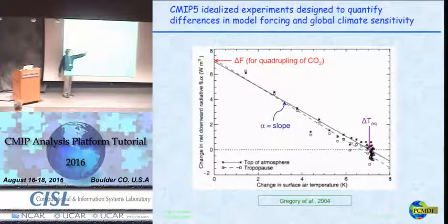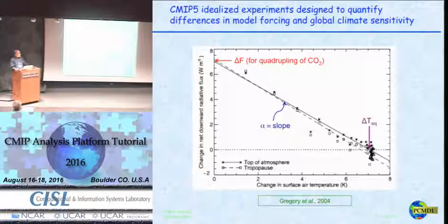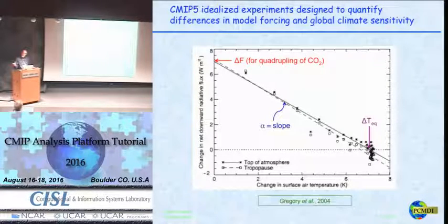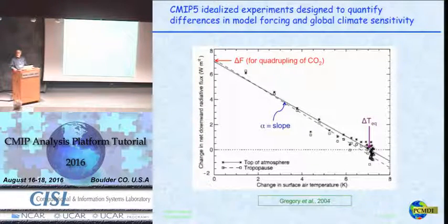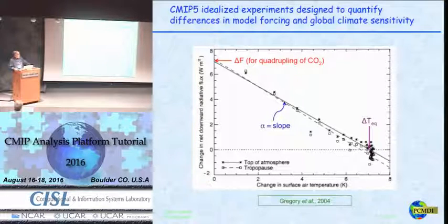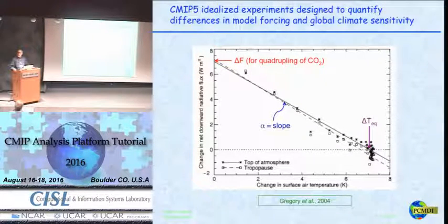The fact that these points lie more or less on a straight line tells you that feedbacks in the model are more or less proportional to the global temperature change, so the slope is a measure of the feedback parameter. From this experiment you can see how strong the feedbacks are, estimate the forcing, and estimate the equilibrium temperature change. This is a basic characteristic of models and carries over to other forcing agents — for example, it's a good estimator of how a model would respond to solar forcing.